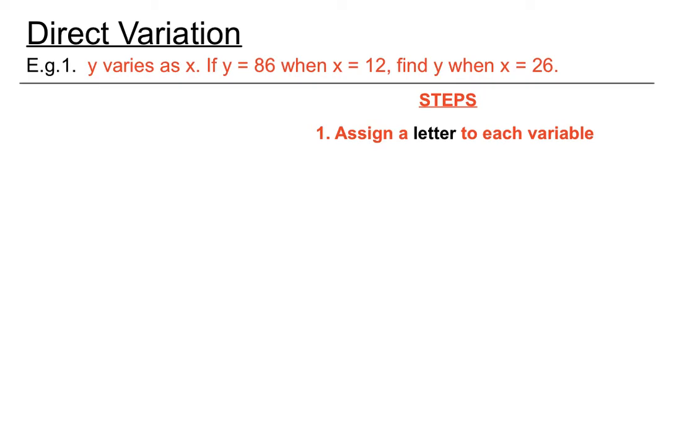Step one: assign a letter to each variable. This question has already given us X and Y. They've already assigned a letter to each variable. So we won't have to worry about step one in this case. Step two: write the basic formula. The basic formula is Y equals KX. We've got Y and X in this question, so we'll stick to that basic formula.